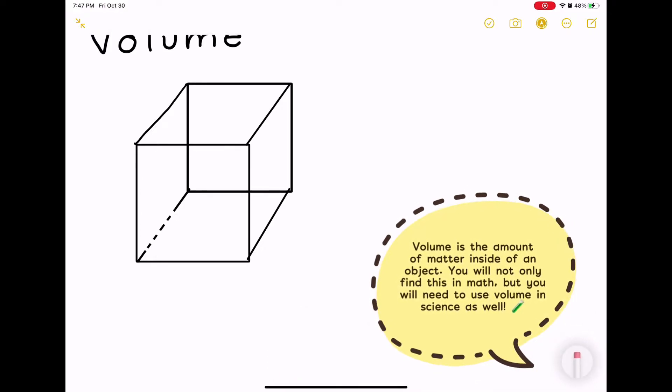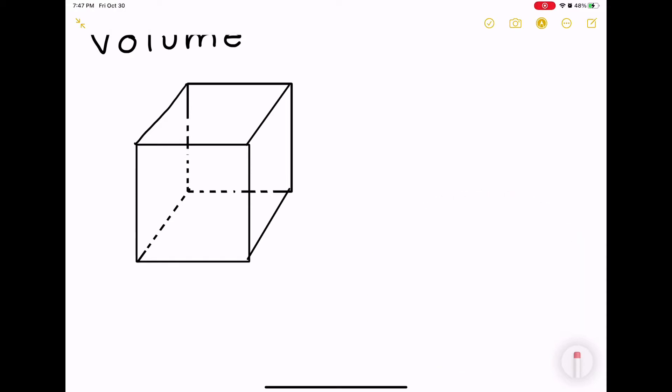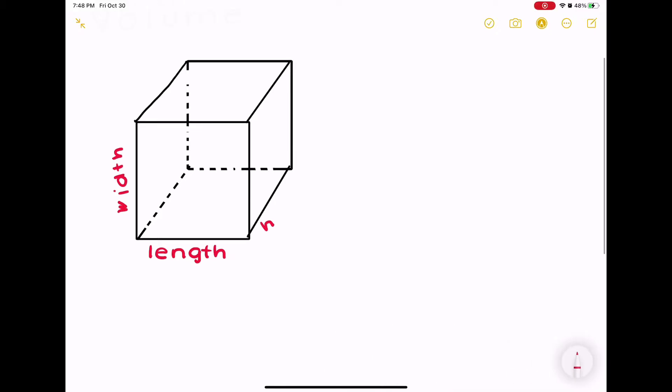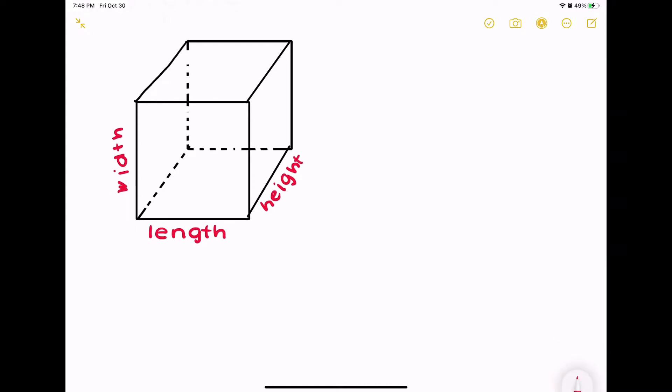Volume is three-dimensional, and three-dimensional means we're going to be multiplying three terms. In this, as you can see, we have three different sides: the length, the width, and the height.